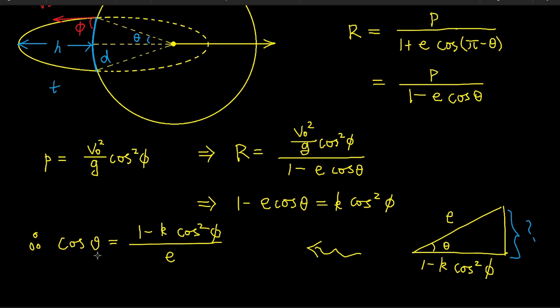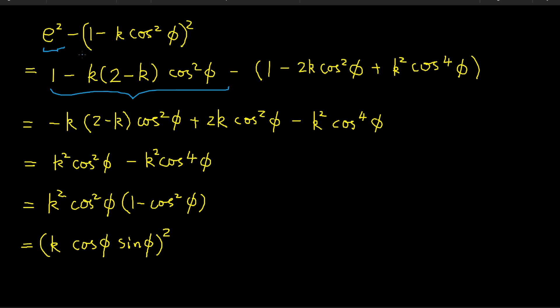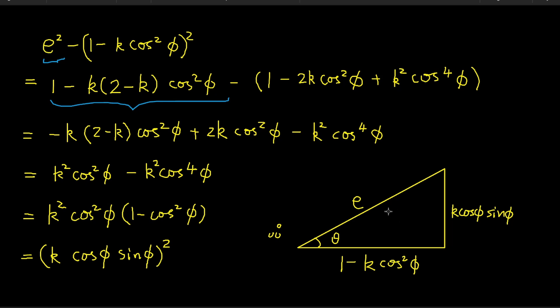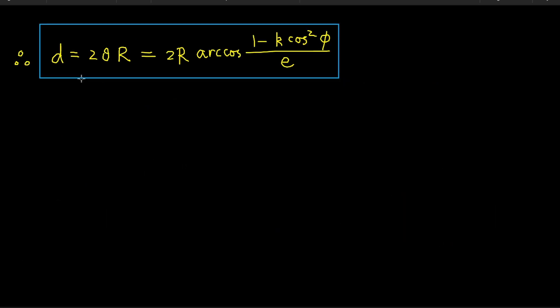We may verify that this expression for cos θ is between 0 and 1 by calculating the squared length of the side opposite to θ, which is e² − (1 − k·cos²(φ))². The result is (k·cos(φ)·sin(φ))², completing the right triangle. The projectile's range d is equal to 2r · arccos[(1 − k·cos²(φ)) / e].